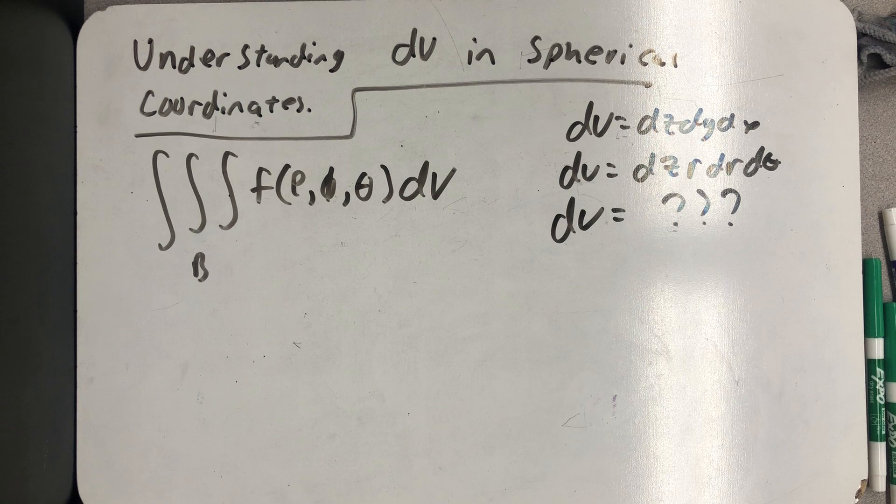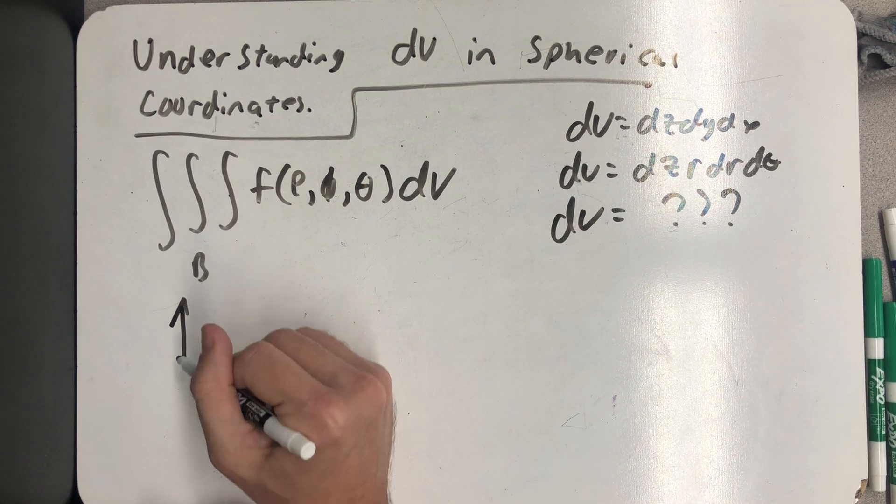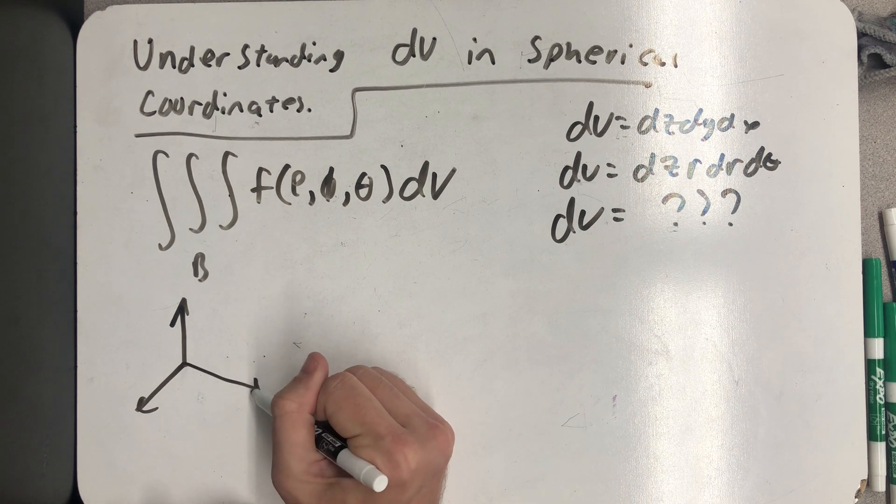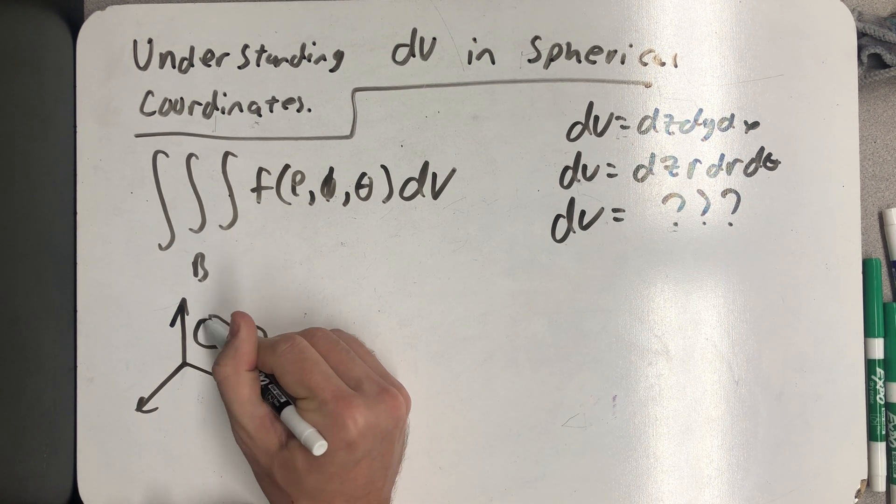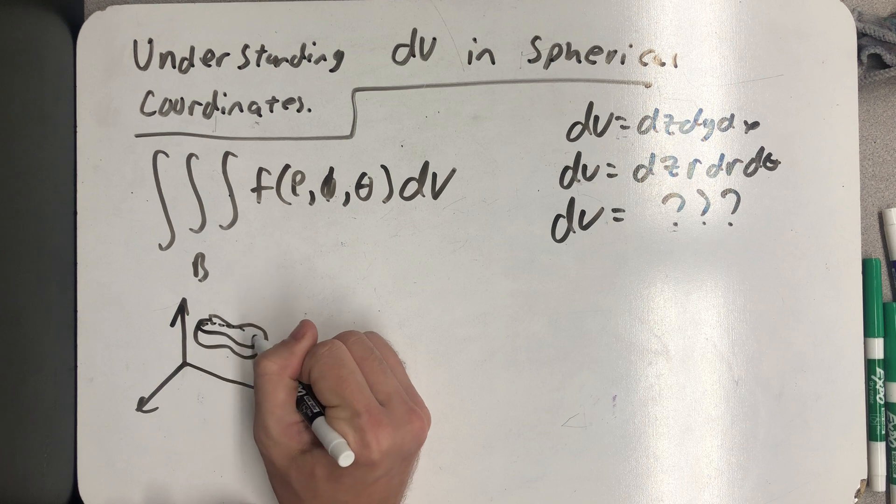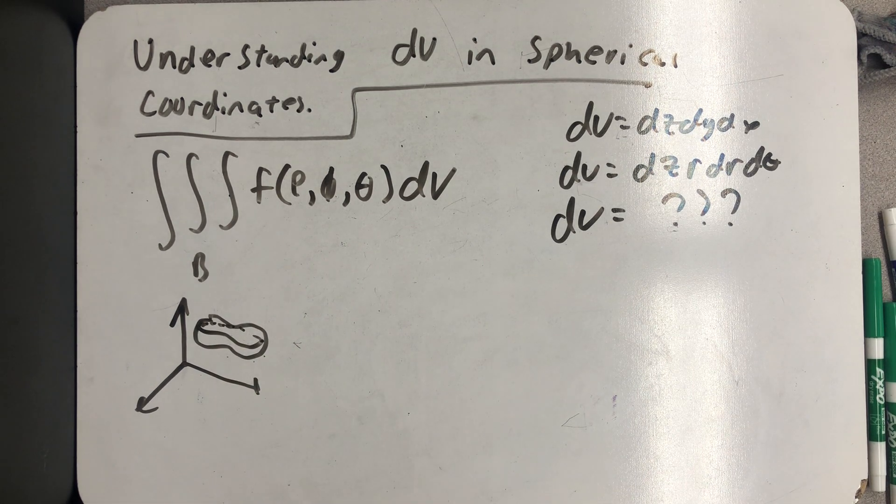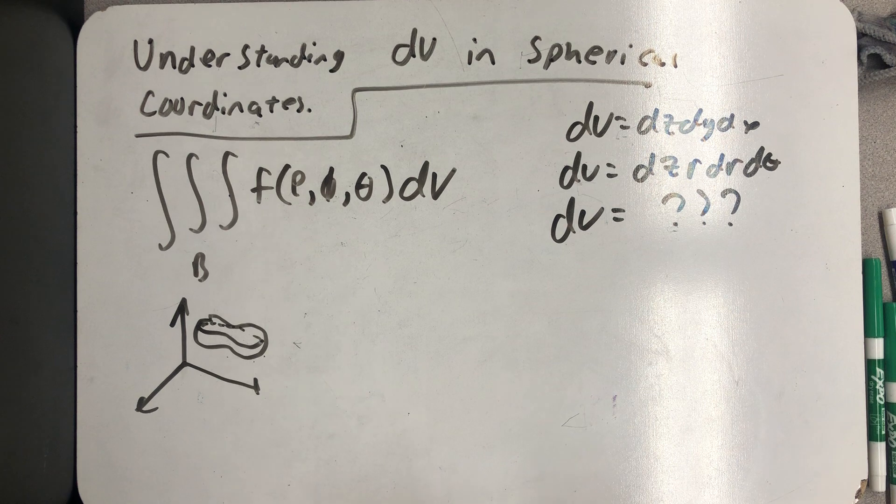And like we did in cylindrical coordinates, I want to start by thinking about what would we partition a region B into in space to set up the Riemann sum? What does a little spherical increment look like?